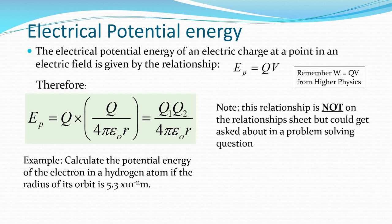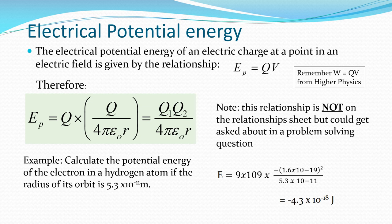Example: calculate the potential energy of an electron in a hydrogen atom if the radius of its orbit is 5.3 times 10 to the negative 11 metres. We see the electrical potential energy equals 9 times 10 to the 9, multiplied by negative 1.6 times 10 to the negative 19 squared, because the charge on an electron is negative, giving a negative value of negative 4.3 times 10 to the negative 18 joules.